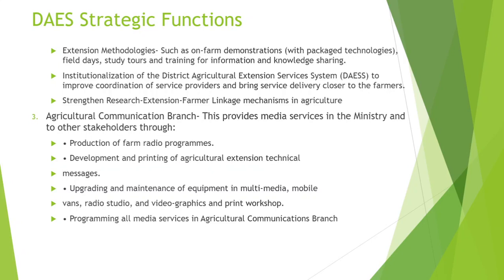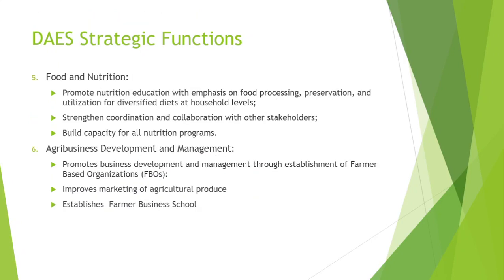Agri-Business Development and Management promotes business development and management through establishment of farm-based organizations, improves marketing of agricultural produce, and establishes farmer business schools. In terms of its organizational structure, DAES is divided into four tiers: national at the upper level, then the aggregated women divisions, the districts, and extension planning areas at the lowest level.